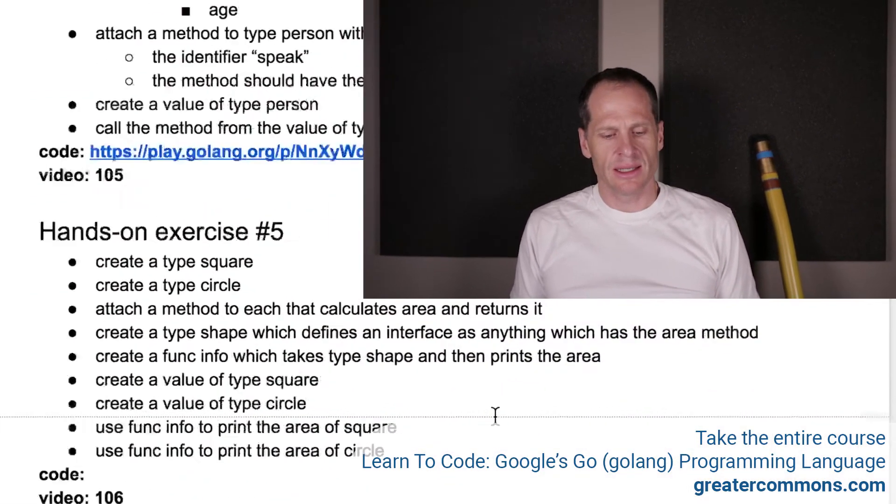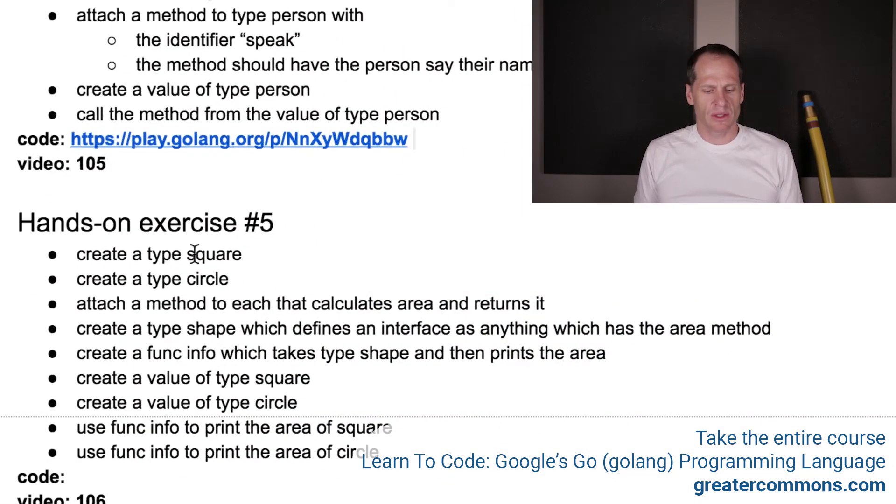Alright, I really like this hands-on exercise number five. You're going to create a type square, create a type circle, attach, and these will both be structs. Attach a method to each that calculates the area and returns it. And I'll put those formulas in here. So when you look at this, you'll be able to see those formulas. Create a type shape which defines an interface as anything which has the area method.